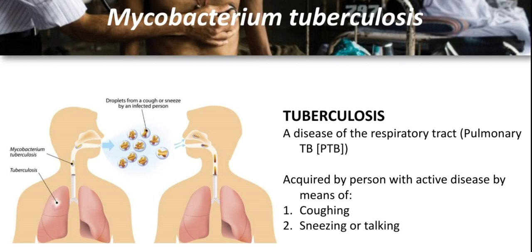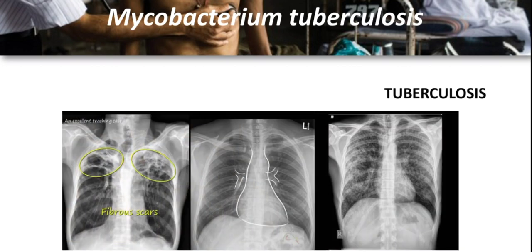When a person breathes in TB bacteria, the bacteria can settle in the lungs and begin to grow. From there, they can move through the blood to other parts of the body such as the kidney, spine, and brain. TB disease in the lungs or throat can be infectious, meaning bacteria can spread to other people. TB in other parts of the body such as the kidney or spine is usually not infectious. With pulmonary TB being the most common form, chest radiograph is useful for diagnosis, and chest abnormalities can suggest pulmonary TB disease.